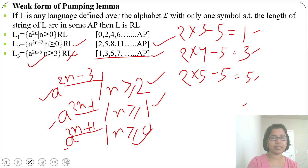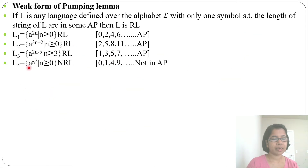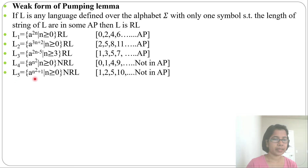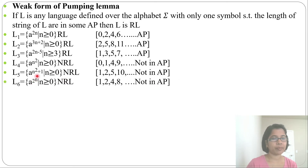Now consider L = {a^(n²) | n ≥ 0}: the number of a's is 0, 1, 4, 9, ... — this sequence is not in AP, so it is not a regular language. Similarly, L = {a^(n²+1)}: the sequence is 1, 2, 5, 10, ... — not in AP, so non-regular. And L = {a^(2^n)}: the sequence is 1, 2, 4, 8, ... — also not in AP, so non-regular.